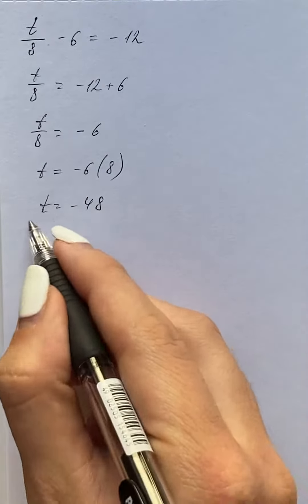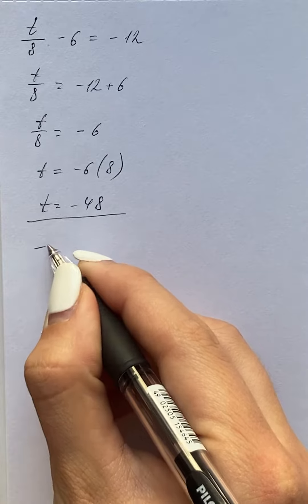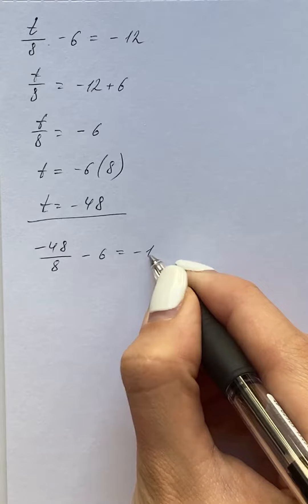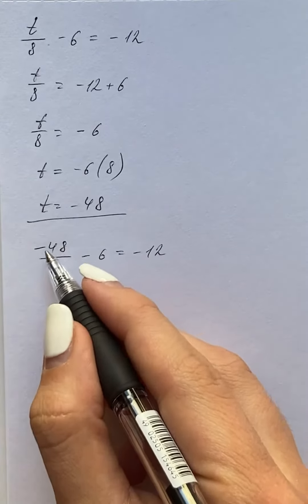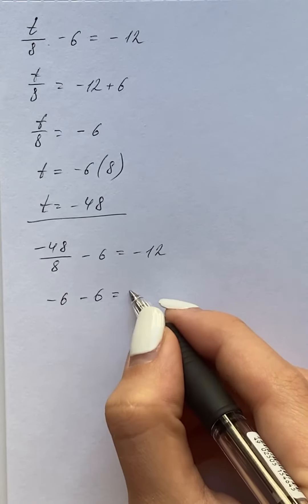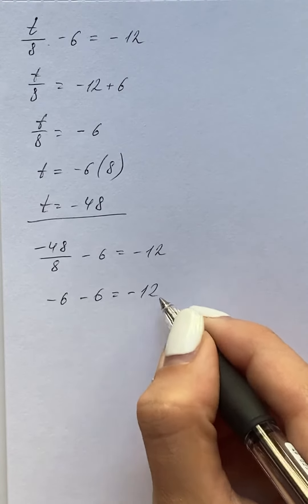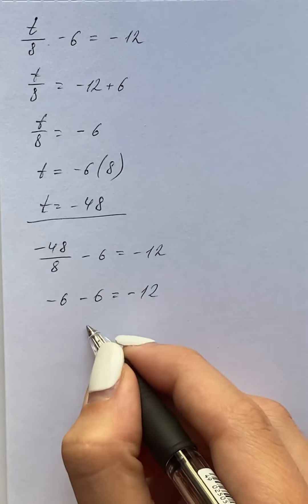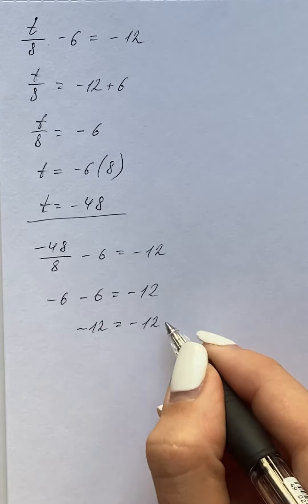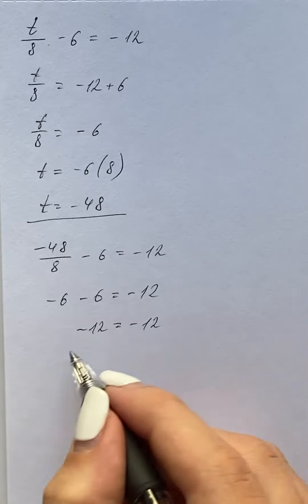So that's going to be negative 48 over 8 minus 6 equals negative 12, that's going to be negative 6 minus 6 equals negative 12, and we have negative 12 on the left-hand side and negative 12 on the right-hand side, hence the equation is proved.